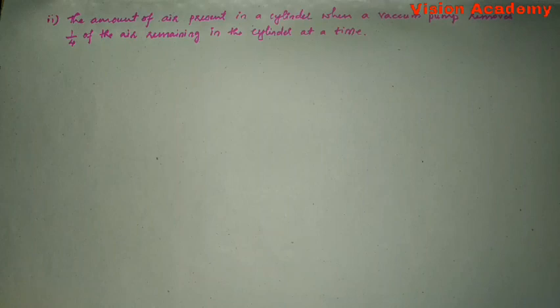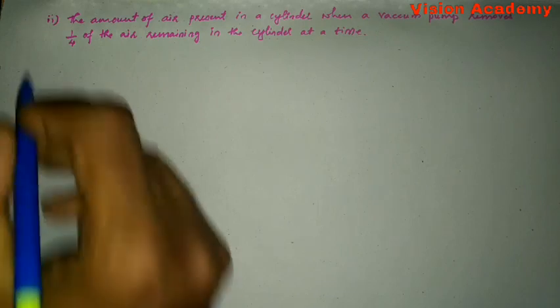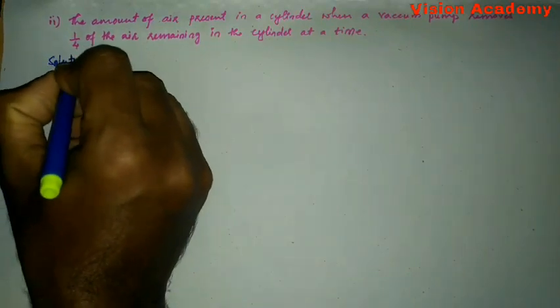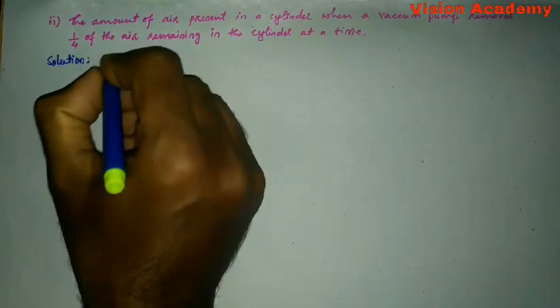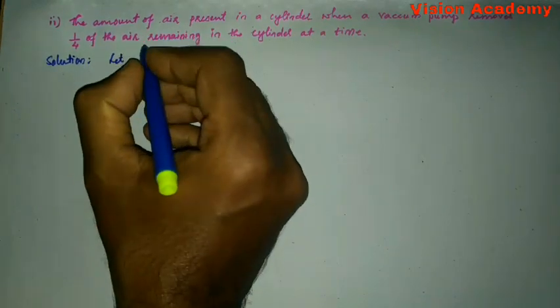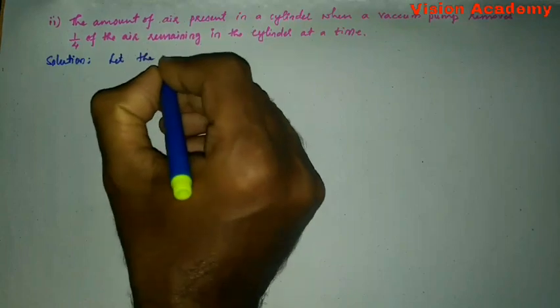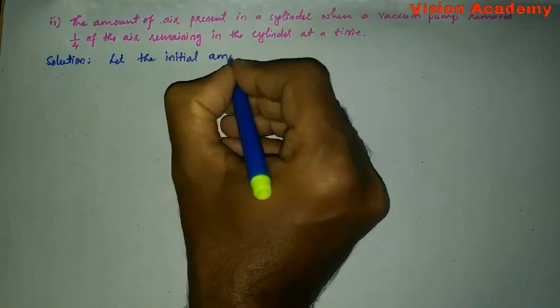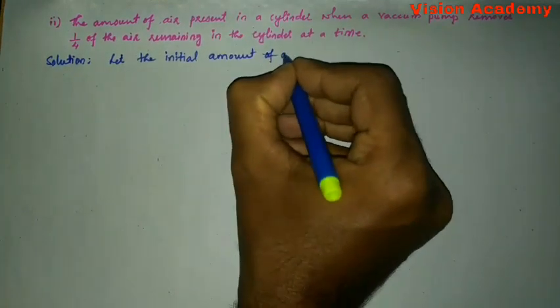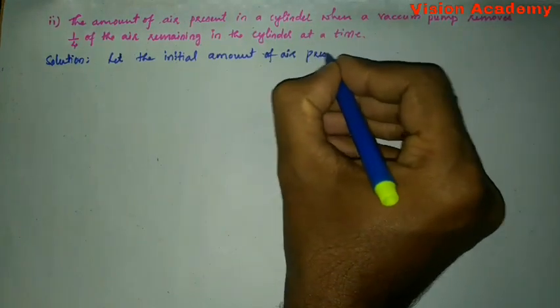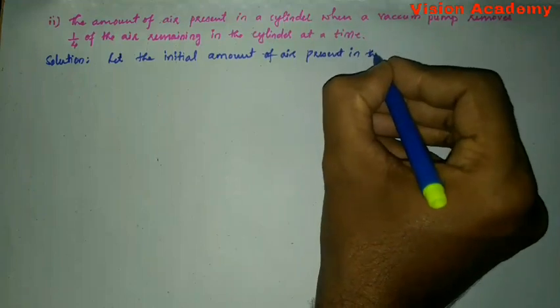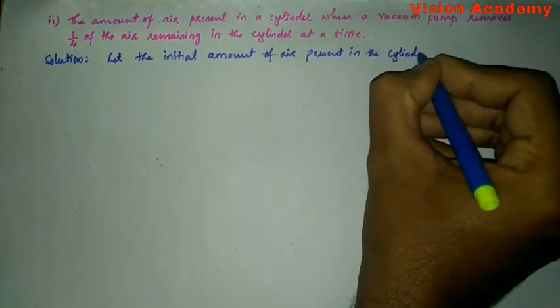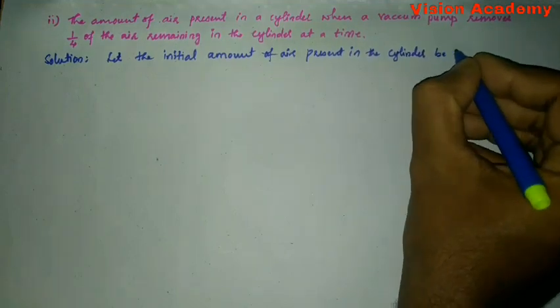Now let us solve the second problem: The amount of air present in a cylinder when a vacuum pump removes one fourth of the air remaining in the cylinder at a time. Let the initial amount of air present in the cylinder be one unit.